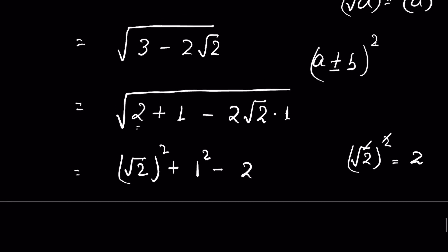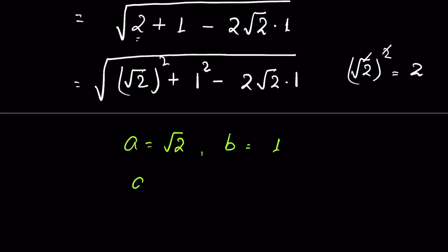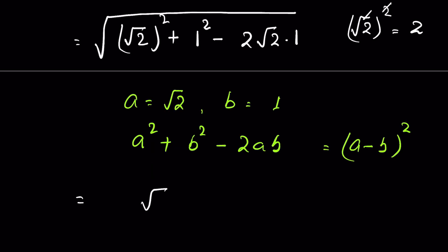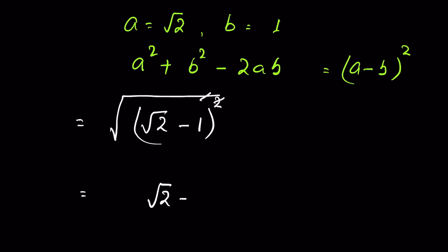So we have square root of 2 squared plus 1 squared minus 2 times square root of 2 times 1, all under square root. Now if a is square root of 2 and b is 1, then this is in the form of a squared plus b squared minus 2ab, which is the algebraic identity for a minus b whole squared. So we can write it as square root of the quantity square root of 2 minus 1, whole squared, under square root. Removing the square root with the square gives us square root of 2 minus 1.